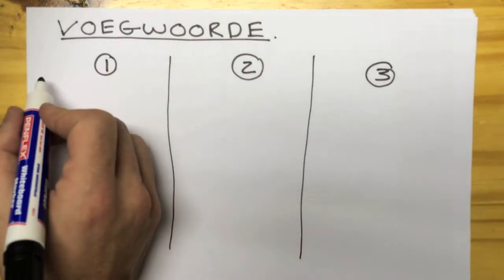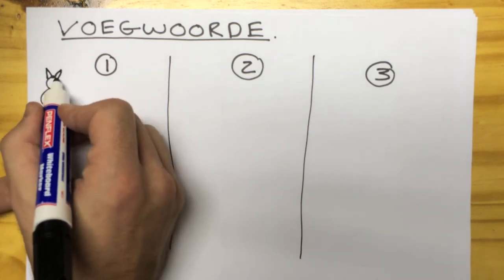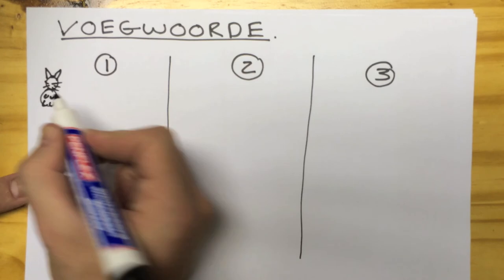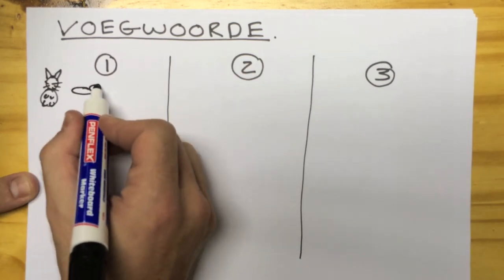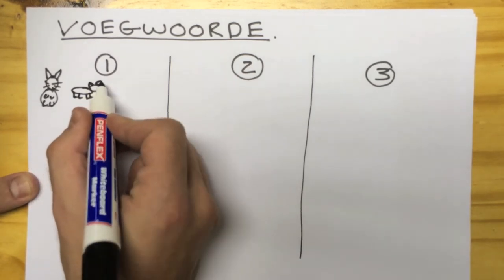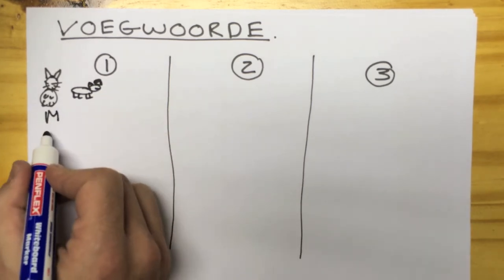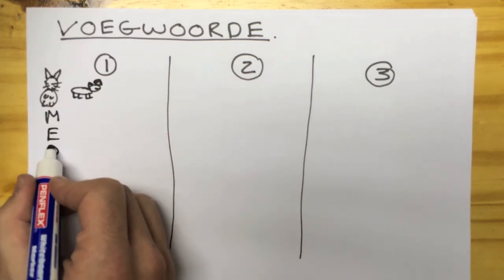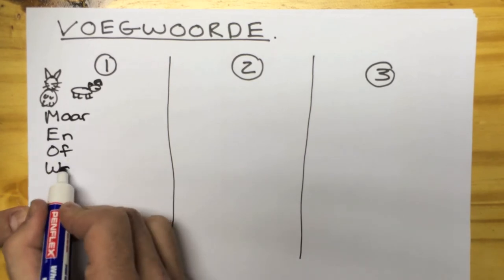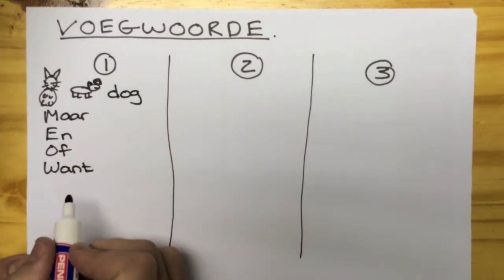In order for you to understand and be able to do conjunctions, you need to learn all the conjunctions off by heart and what they mean. In group 1, I drew a cat and a dog, just to help you remember the few words belonging to group 1. The cat makes the sound miau, and the miau stands for maar, en, of, and want. The dog is for doch.